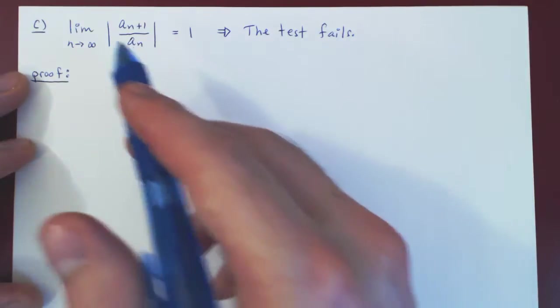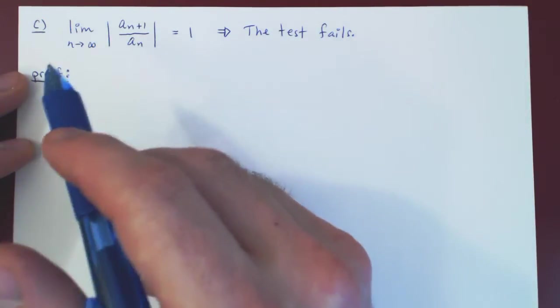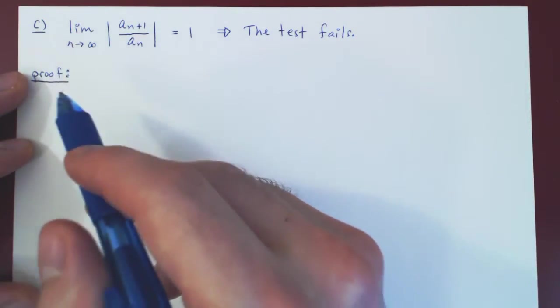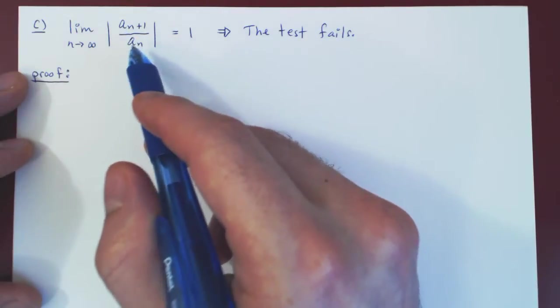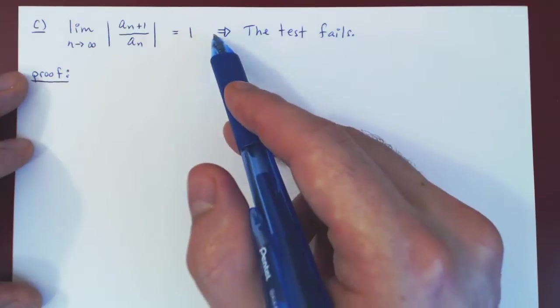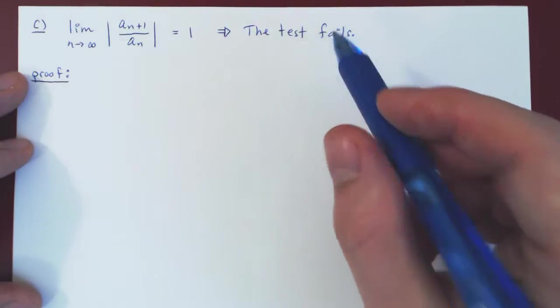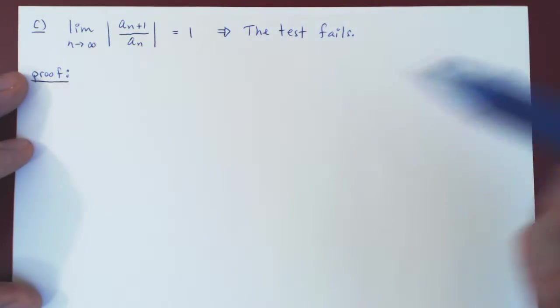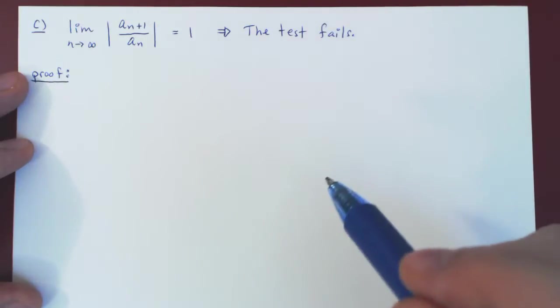Okay, so in this video we will prove part C of the ratio test, which says if the limit as n tends to infinity of a_{n+1} over a_n in absolute value is equal to 1, then the test simply fails, which means we cannot conclude either convergence or divergence of the corresponding series.